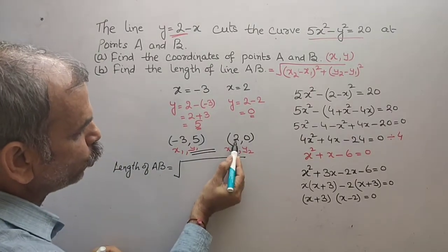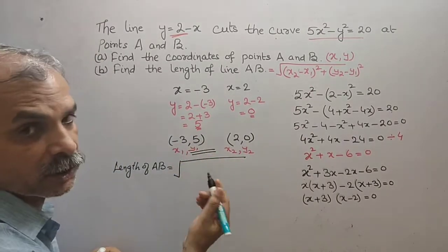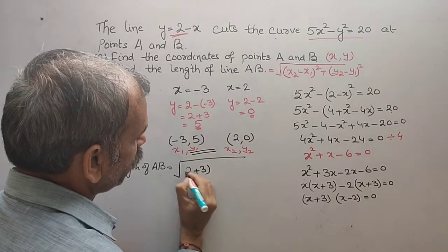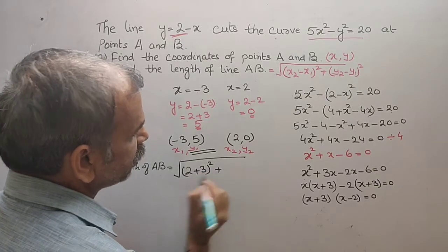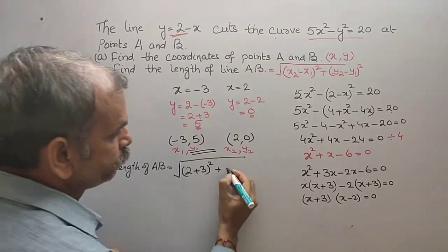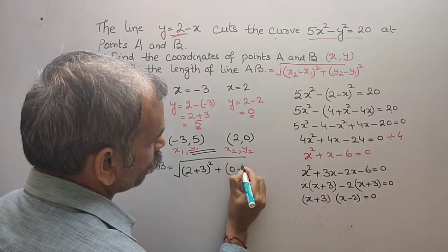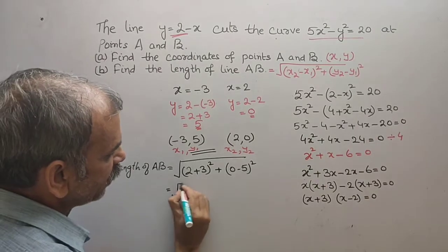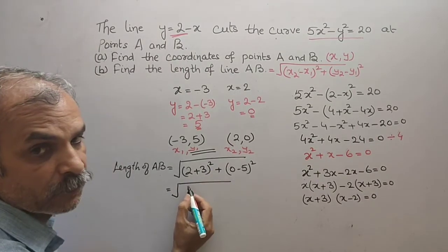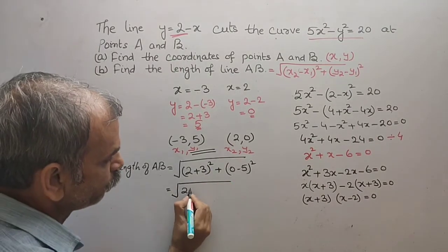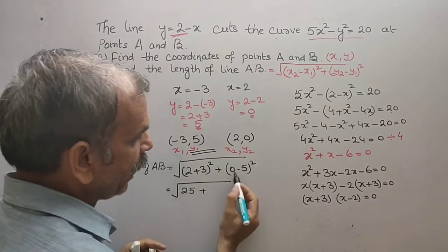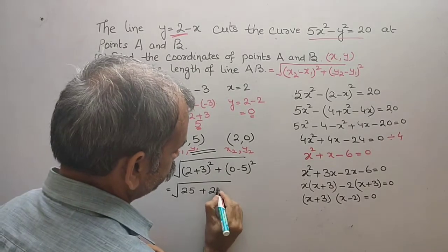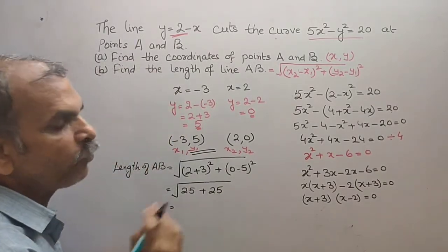What we will get? x₂ - x₁, that means 2 - (-3), that is 2 + 3 whole square, plus now 0 - 5 whole square. That is equal to, you can see here you will get 5², 5² is 25, plus again -5² is 25.